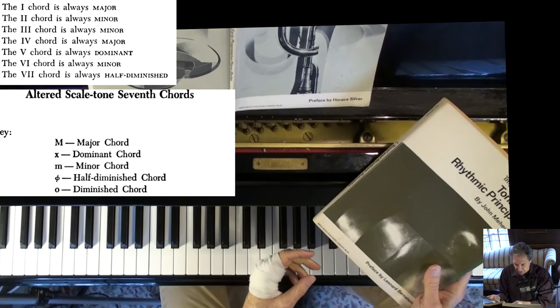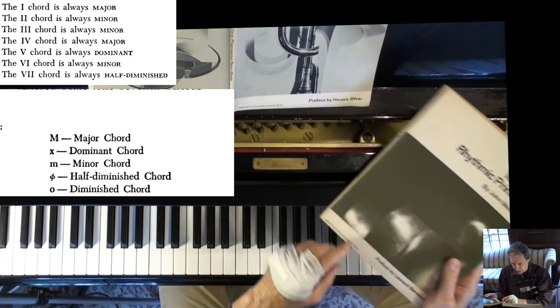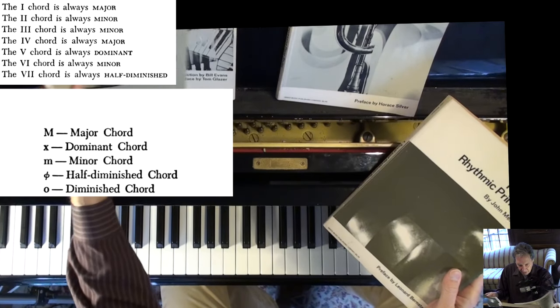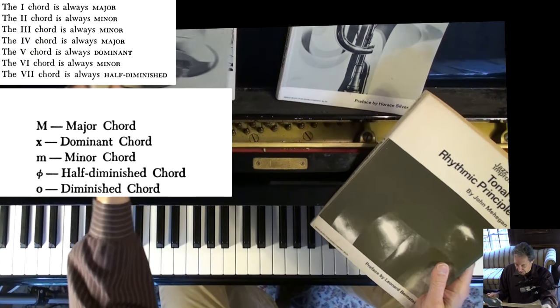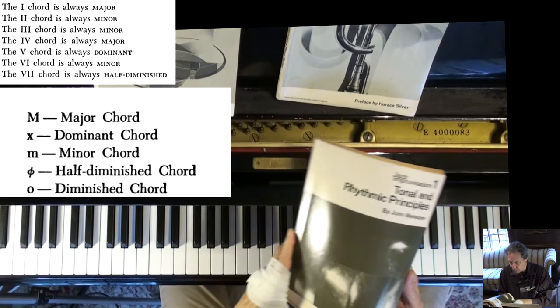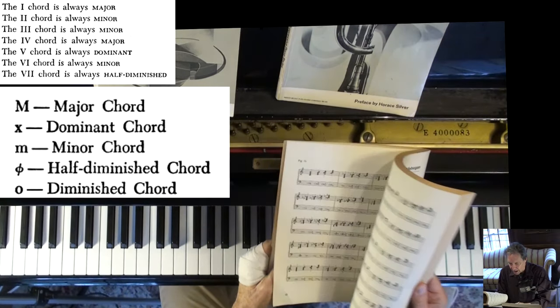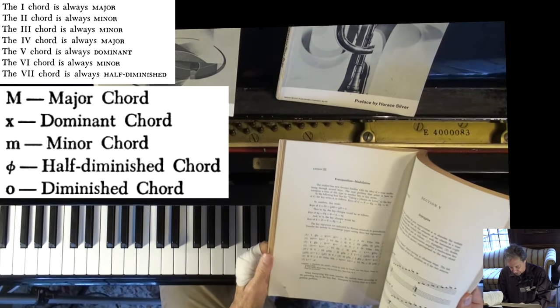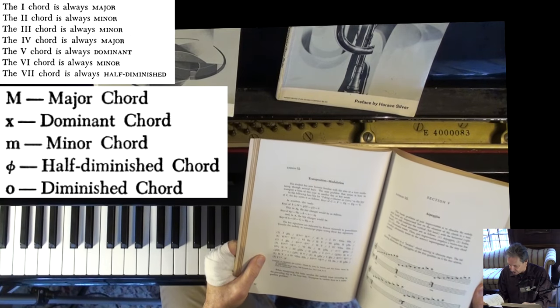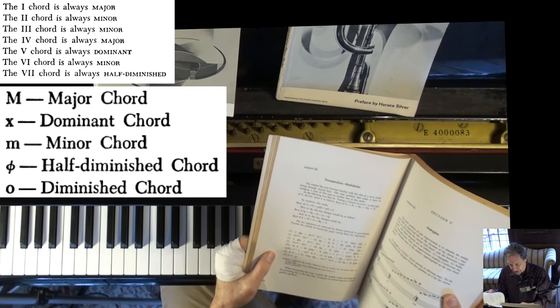John Mahegan, prefaced by Leonard Bernstein, Horace Silver, Howard Arlen, and Tom Glazer. And the reason I got these books is when I first had this book, and I was probably in my early 20s, and it has all these songs.